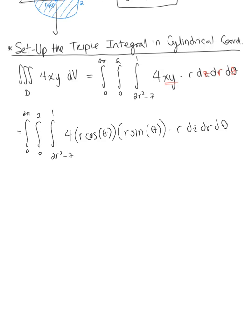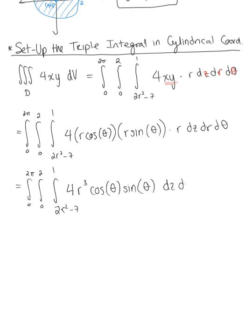Simplifying, combining the three r factors gives r cubed, so the integrand becomes 4r cubed cosθ sinθ, and the integral is from 0 to 2π, 0 to 2, 2r squared minus 7 to 1, of 4r cubed cosθ sinθ dz dr dθ.